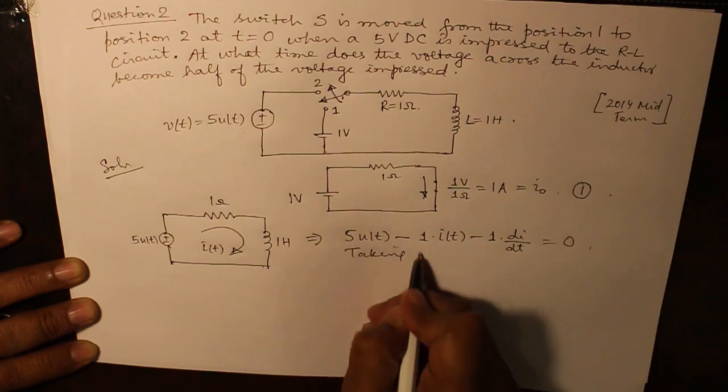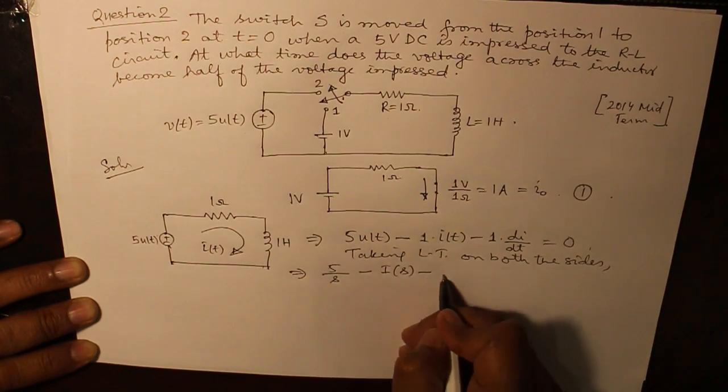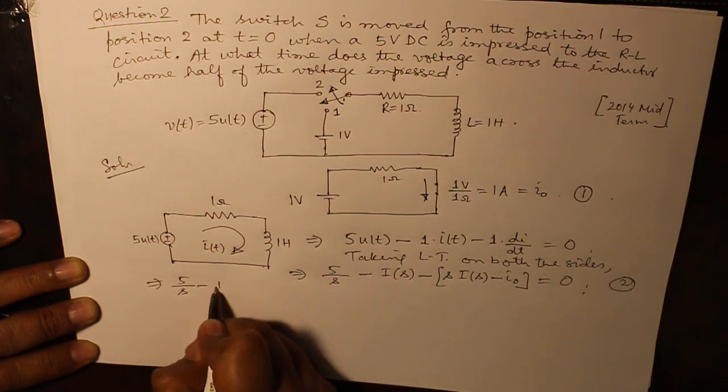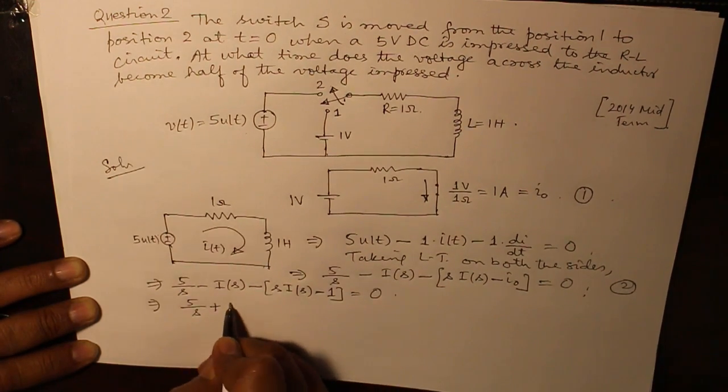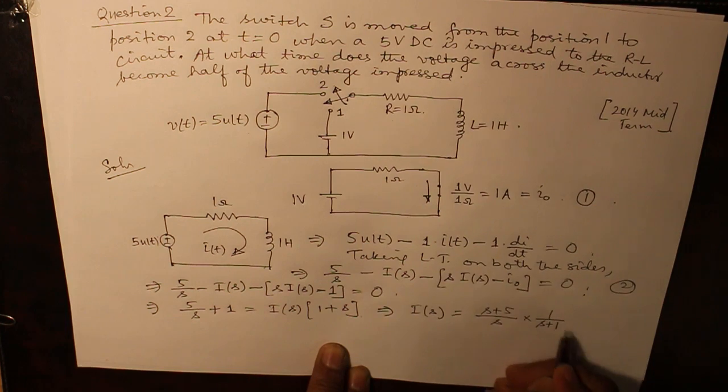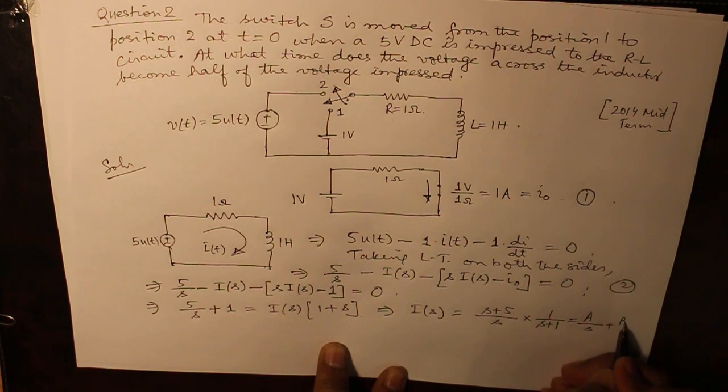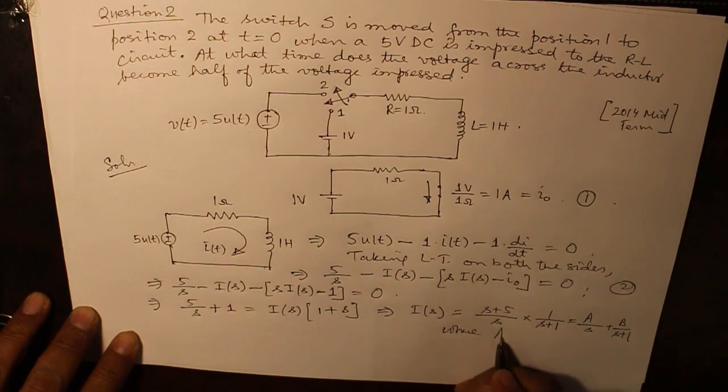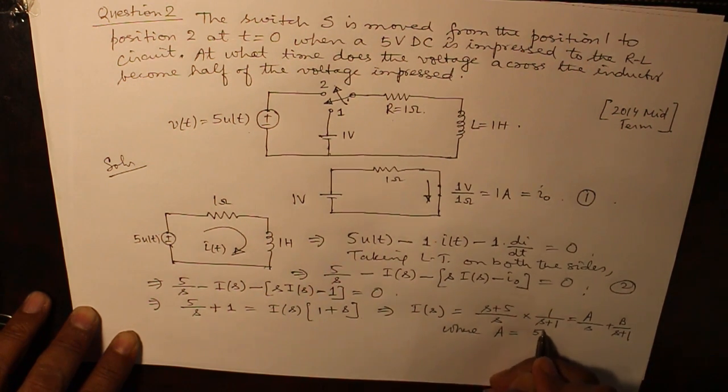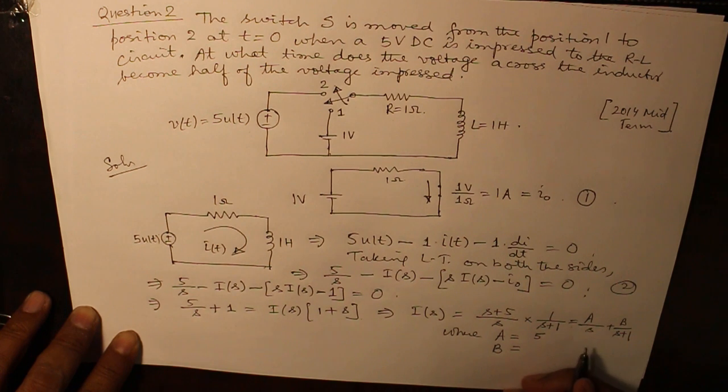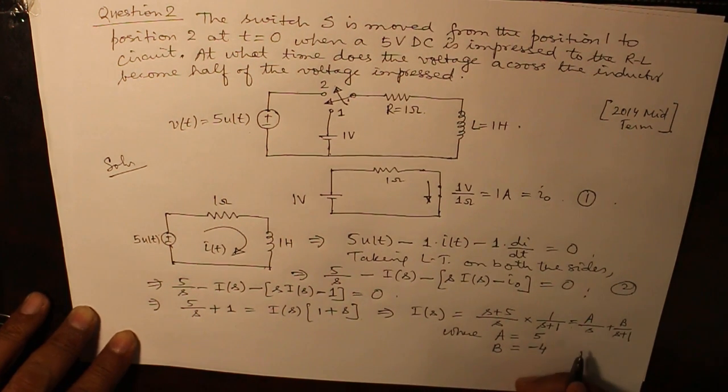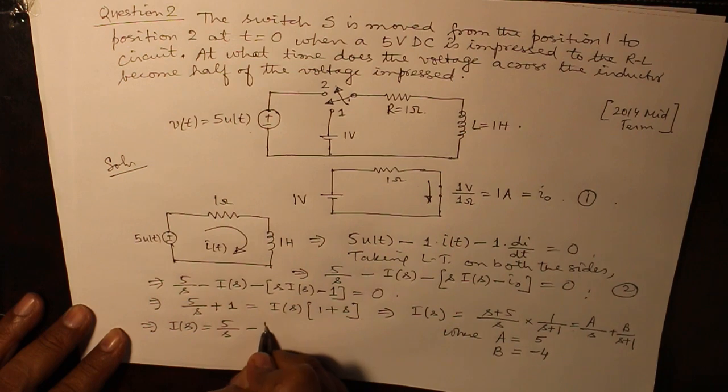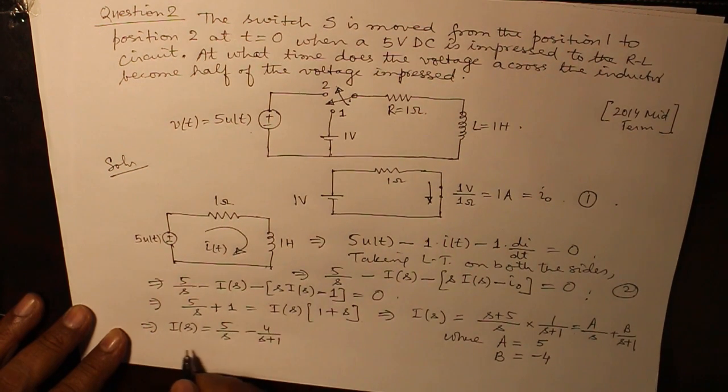Taking Laplace transform on both sides, putting the value of I0 equals 1 ampere, taking partial fraction where A is equal to 5 and B is equal to minus 4. Putting back, IS becomes 5 over S minus 4 over S plus 1. On taking Laplace inverse...